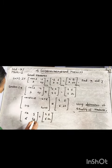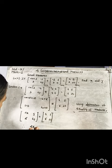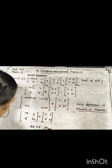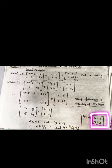Therefore 2x equals 4 and 4y equals 12. Solving: x equals 4 divided by 2, which equals 2, and y equals 12 divided by 4, which equals 3. Therefore x equals 2 and y equals 3.